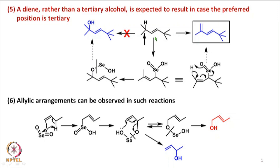How the reaction takes place is that there is a carbon-selenium bond formation here accompanied by proton loss to form a double bond. This type of selenium intermediate then undergoes rearrangement to form an oxygen-carbon bond accompanied by migration of the double bond, forming an intermediate where the oxygen-selenium bond is cleaved, resulting in the tertiary allylic alcohol. This is what one is expected to form.